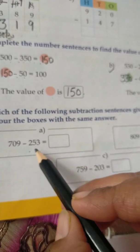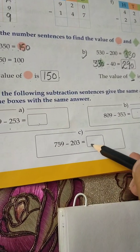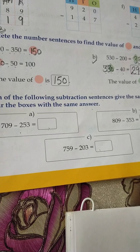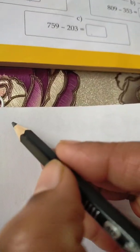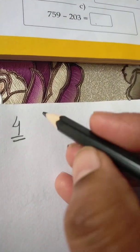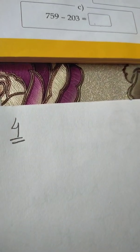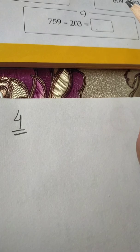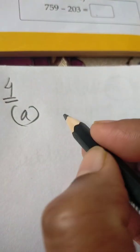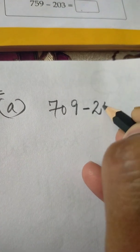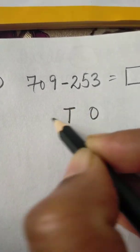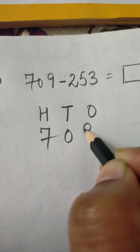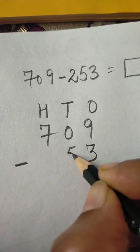Here you can see three parts: a, b, and c. We have to do subtraction, and the boxes with the same difference we have to color. You can do this sum on the book or notebook — it is your choice. Because we have to do coloring, we can do this on the book as well. A part: 709 minus 253. We do subtraction — ones, tens, hundreds: 709 minus 253.